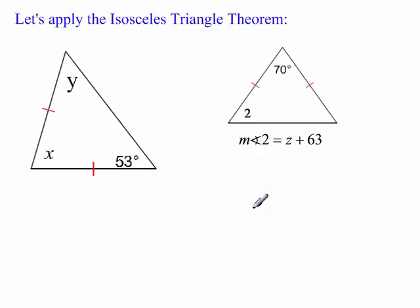So let's apply this stuff. If we have this side is congruent to that side, those are the legs. And then that means that this angle and this angle, these are base angles. So if this is 53 degrees, then y has to be 53 degrees. And then the vertex angle, x, this angle here, x is going to be equal to 74 because 53 plus 53 is 106. Subtract that from 180. There's your 74.